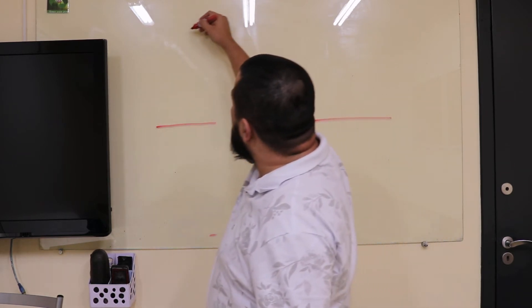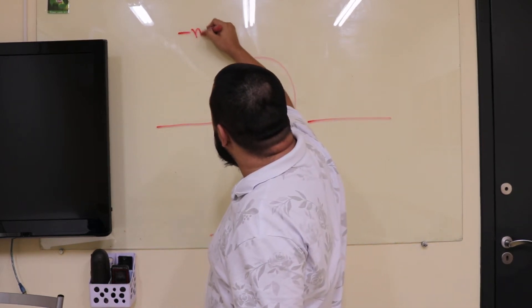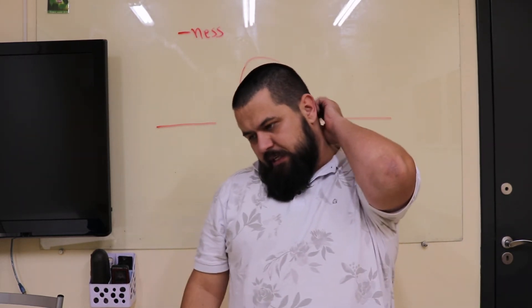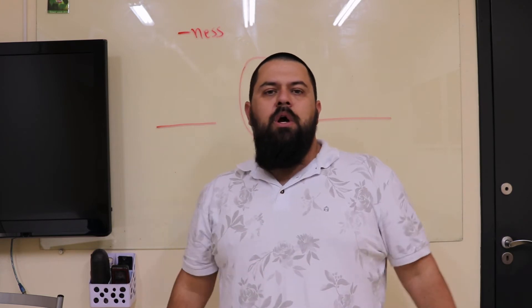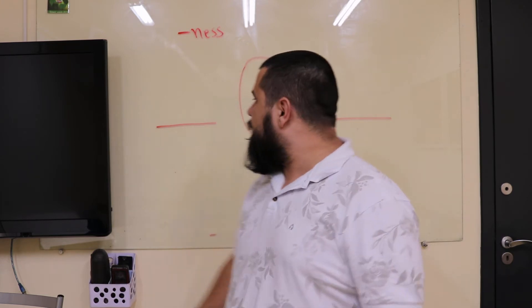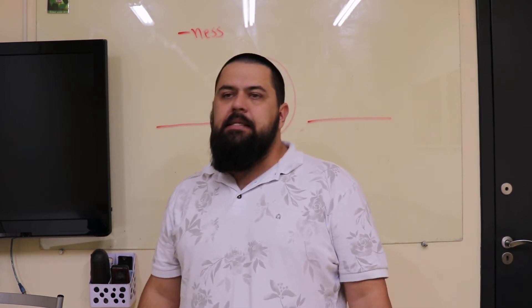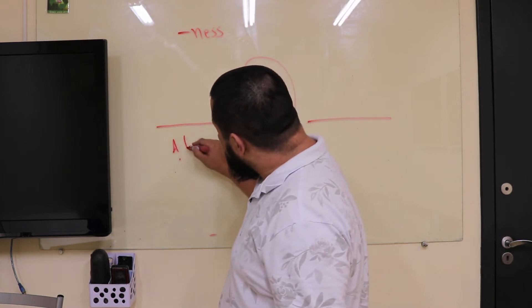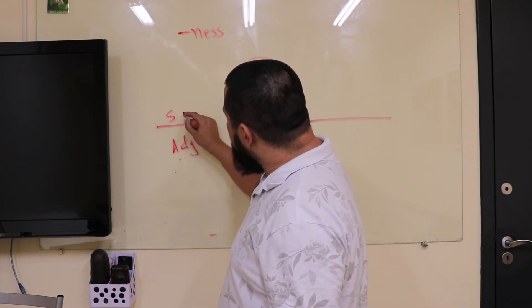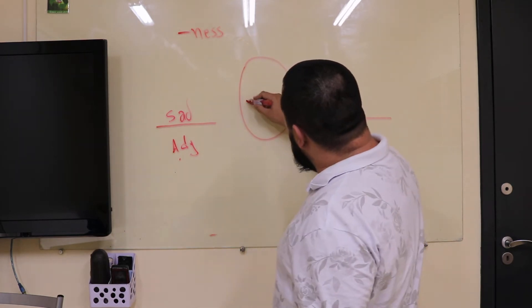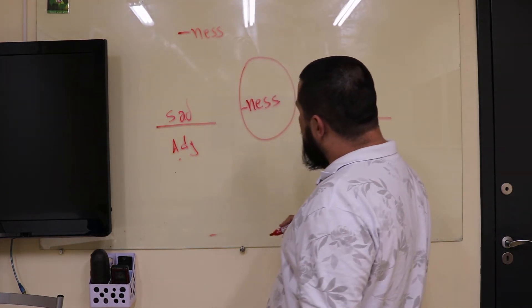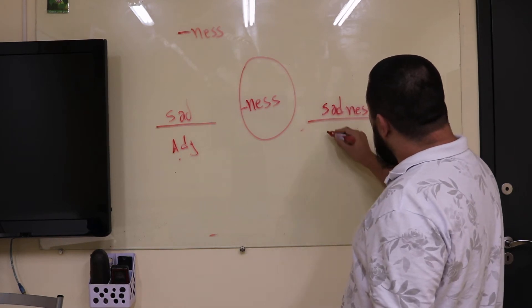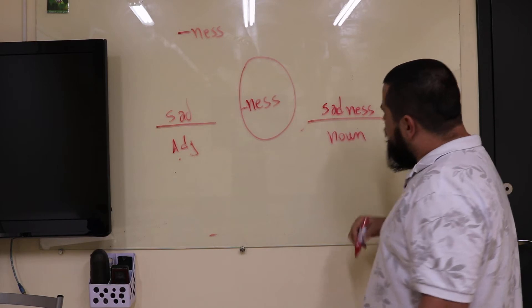First example, let's start with ness. Let's think about ness. So we can get a word like sad, which is an adjective. And then we add ness. And we have sadness. And sadness is a noun.